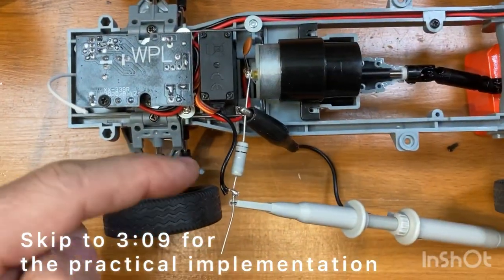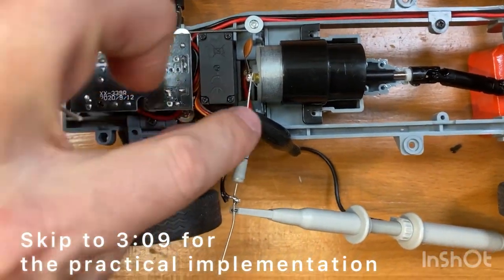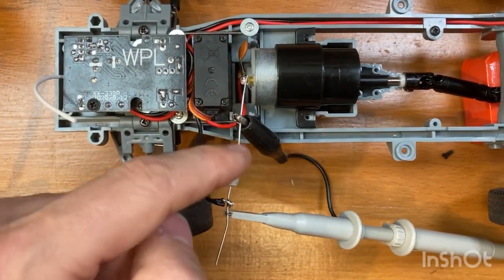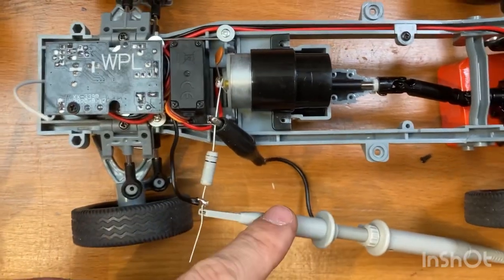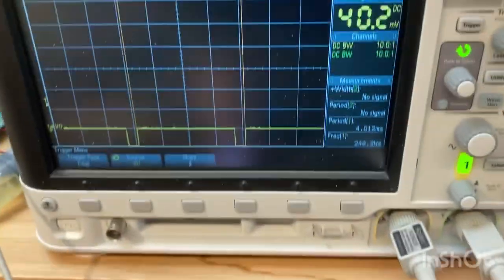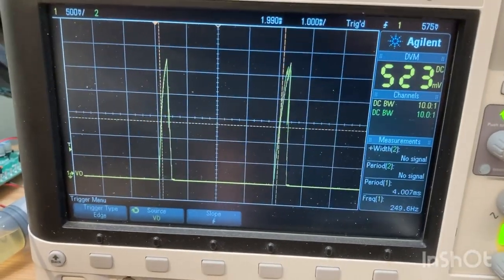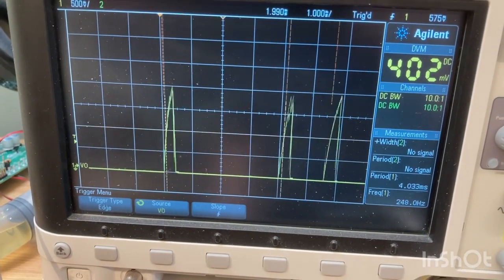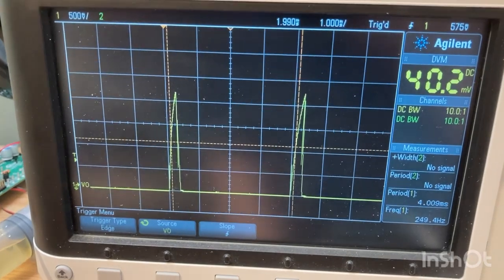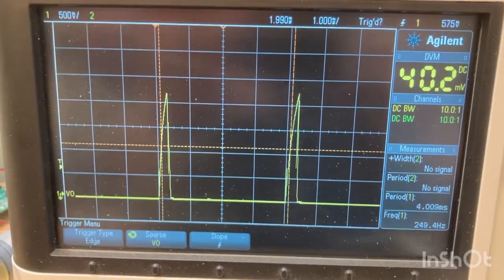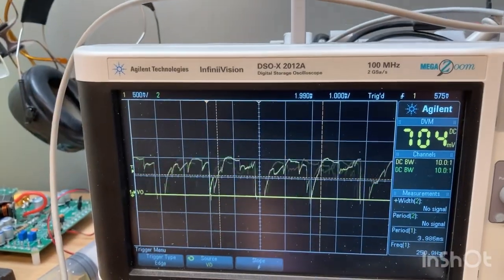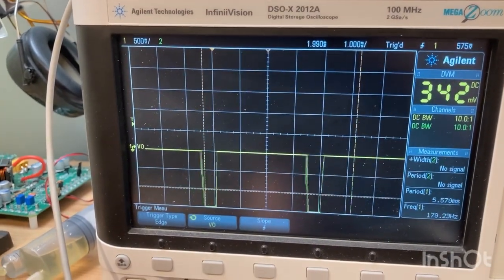I disconnected one of the two motor wires and connected one resistor in the middle, so I can monitor the current on the motor with an oscilloscope. You see the PWM frequency is 250Hz, forward and reverse.